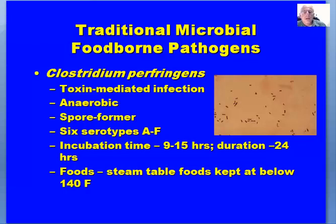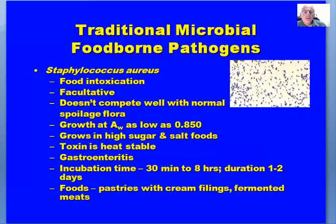Clostridium perfringens is a toxin-mediated infection. Clostridium is a true anaerobe and a spore former. There are six serotypes of C. perfringens, A through F. Incubation time is 9 to 15 hours and the duration is typically about 24 hours. It's very often associated with steam table foods — the 2013 food code changed the holding temperature to 135°F. If temperature gets below 135°F, there is certainly the potential for C. perfringens spores to outgrow in that product and produce toxin.